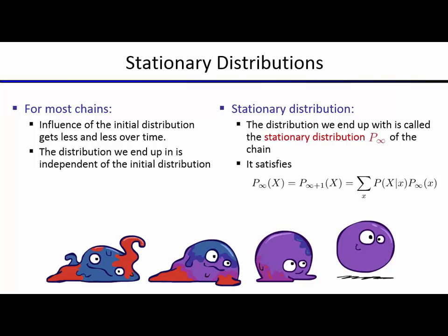For most Markov chains, the influence of the initial distribution gets less and less over time, though there are exceptions depending on your dynamics. As long as a certain set of assumptions is satisfied — informally, a little bit of noise everywhere — you will end up with a stationary distribution that is independent of the initial distribution.